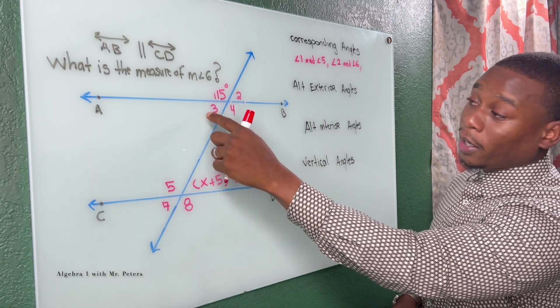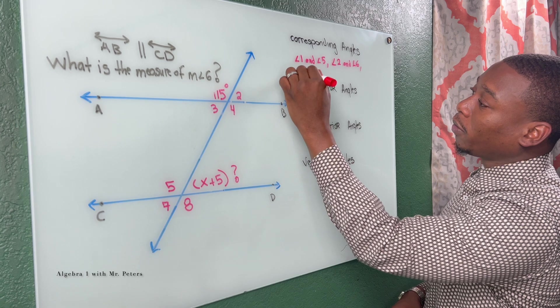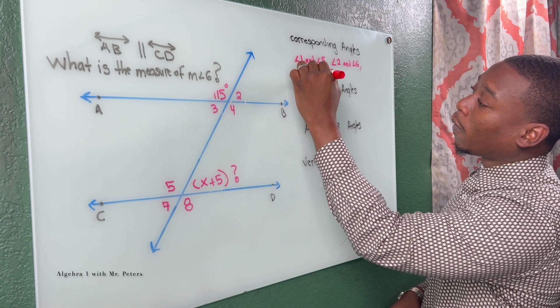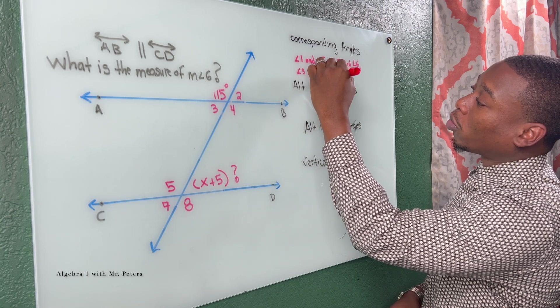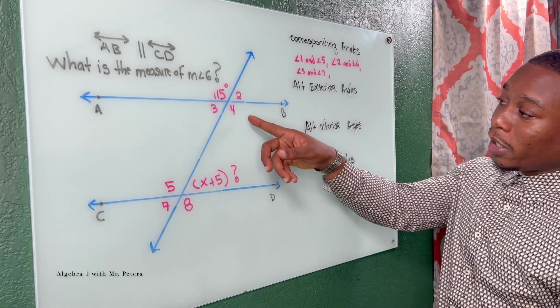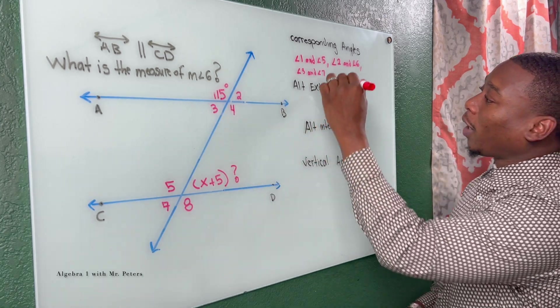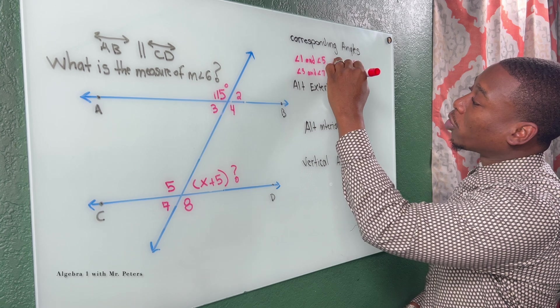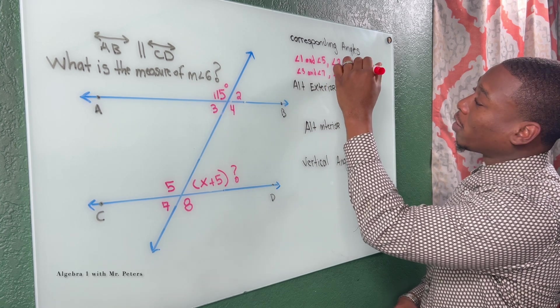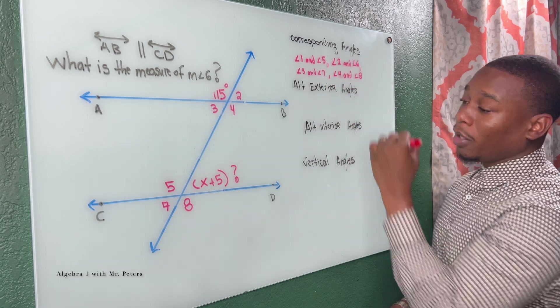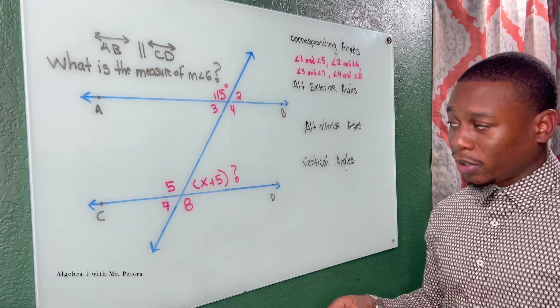We go down and we say angle three and angle seven, angle four are also corresponding angles. And then lastly, angle four and angle eight are also going to be corresponding angles. So based off the position in this intersection, these angles are congruent.